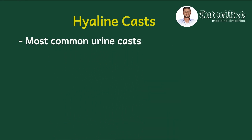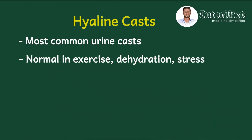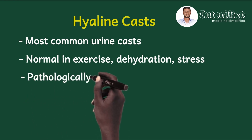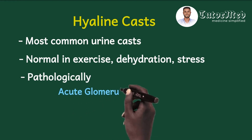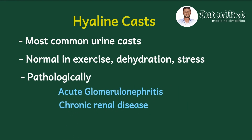Hyaline casts are the most common urine casts. It is normal to find hyaline casts after a patient has undergone strenuous exercise, is dehydrated, is stressed, or is on diuretic therapy. Pathologically, hyaline casts can be found in some disease conditions including acute glomerulonephritis, chronic renal disease, and pyelonephritis.